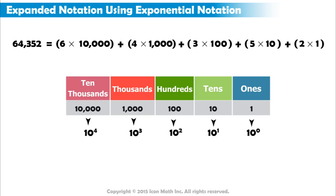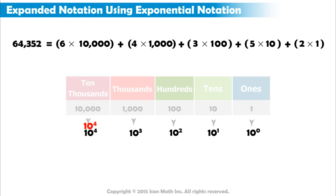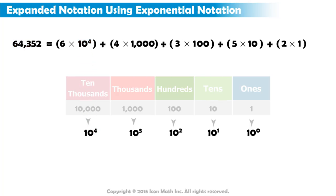Let's go back to our previous example. To write 64,352 in expanded form using exponents, we replace each place value with its exponential notation.